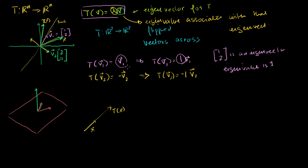This guy is also an eigenvector. The vector 2 minus 1. A very fancy word, but all it means is a vector that's just scaled up by a transformation. It doesn't get changed in any more meaningful way than just a scaling factor. And its corresponding eigenvalue is minus 1.